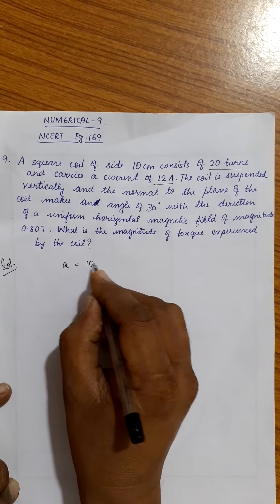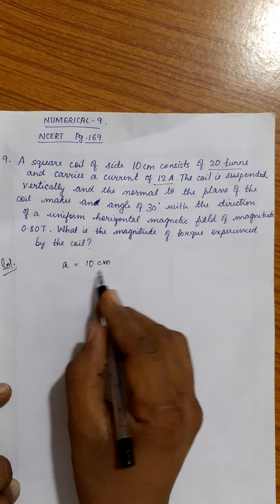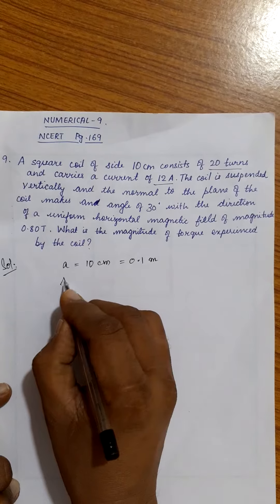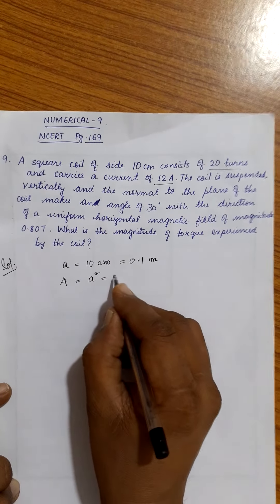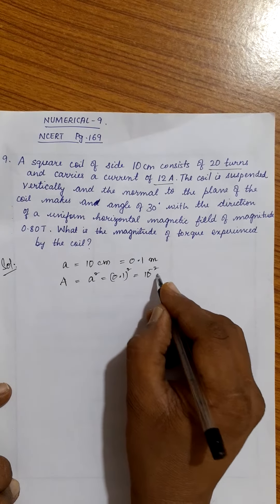So side is given to you as 10 centimeter. I am taking the side as small a here. Small a equal to 10 centimeter, 10 centimeter means 0.1 meter. You need to find the area of this, area equal to a squared, 0.1 whole square. You will get 10 power minus 2 meter square.